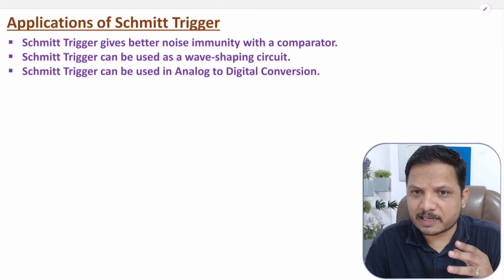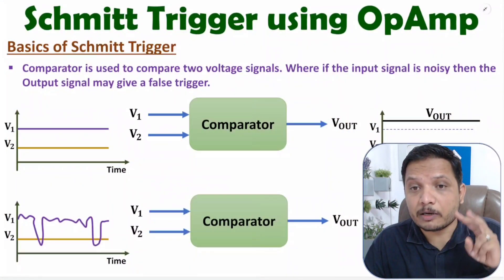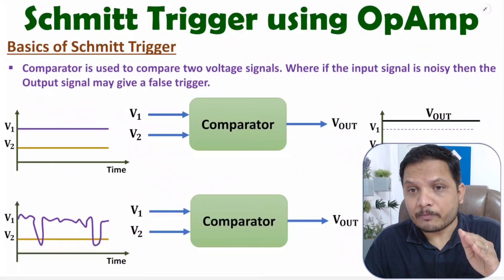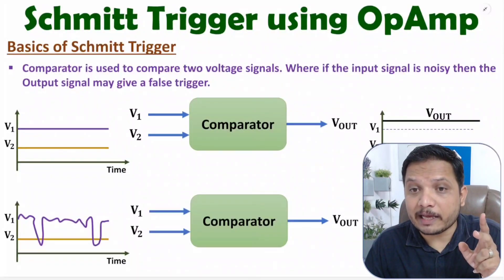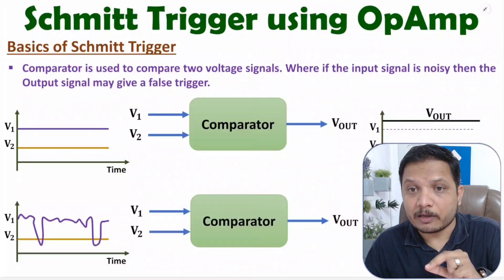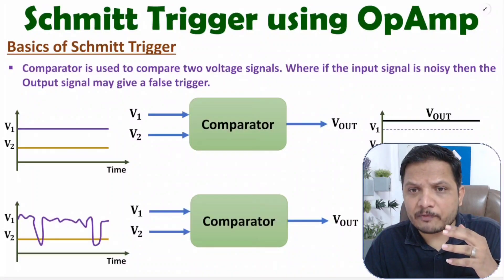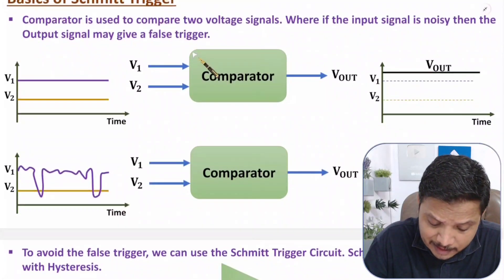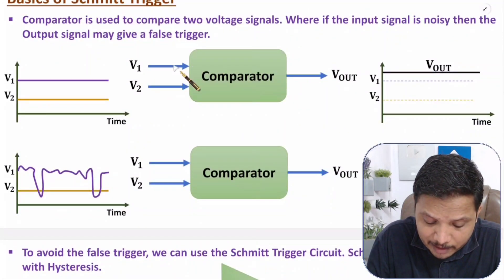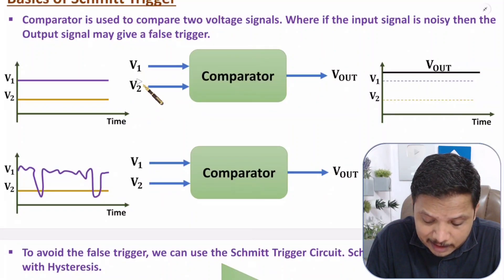Let us begin with the first agenda: basics of Schmitt trigger. A comparator is used to compare two different voltage signals. If one signal is having noise added with it, there is a possibility of false triggering at the output side. To avoid such issues of false triggering, we use the Schmitt trigger circuit.